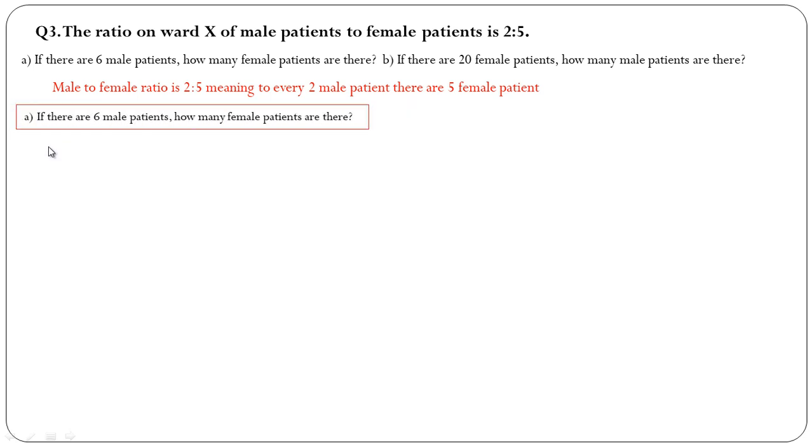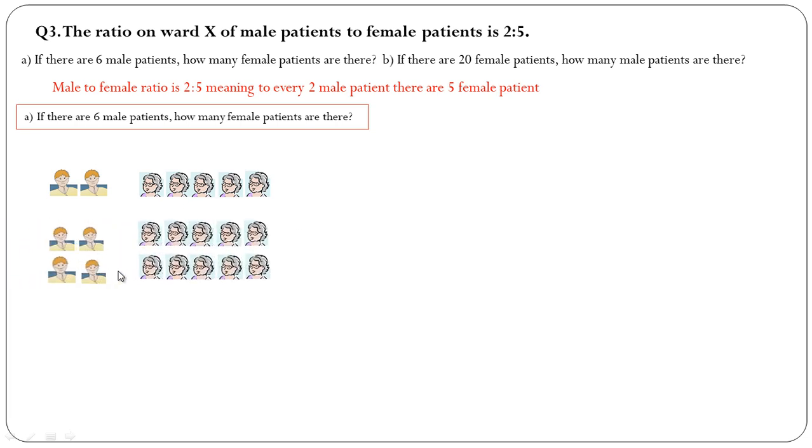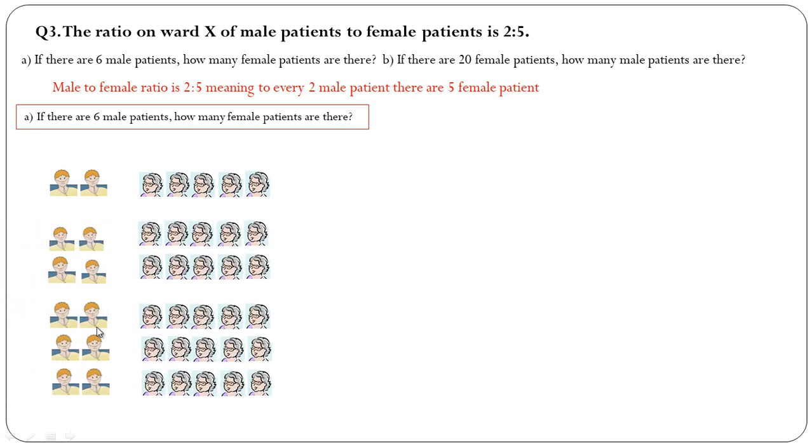We solve first: if there are 6 male patients, how many female patients are there? We know for 2 males there are 5 female patients, so for 4 it will be 10, for 6 it will be 15. So the answer is 15 women.